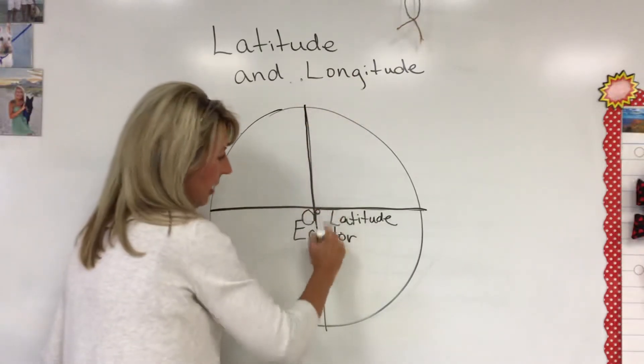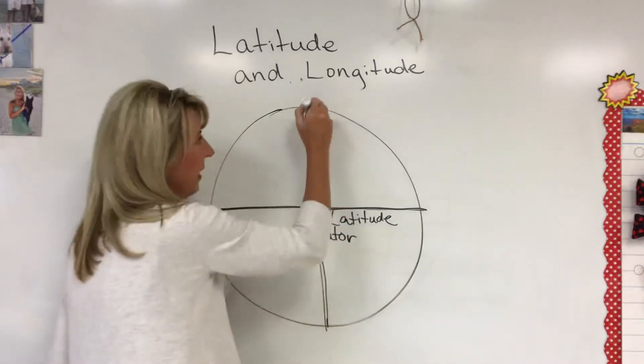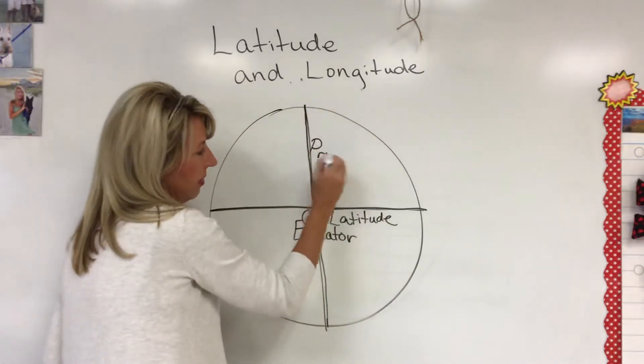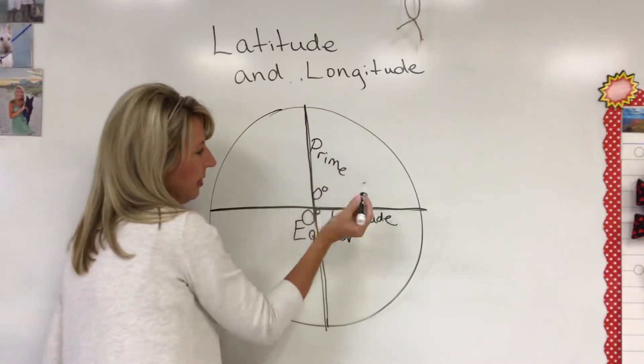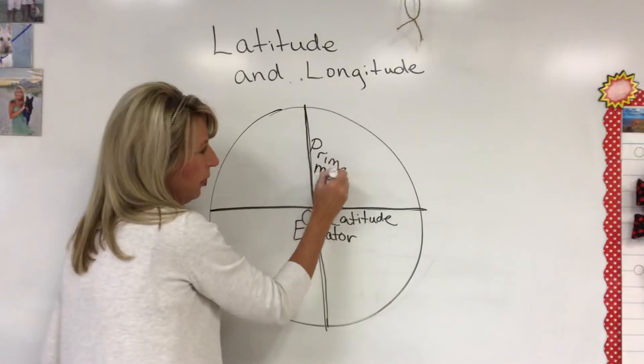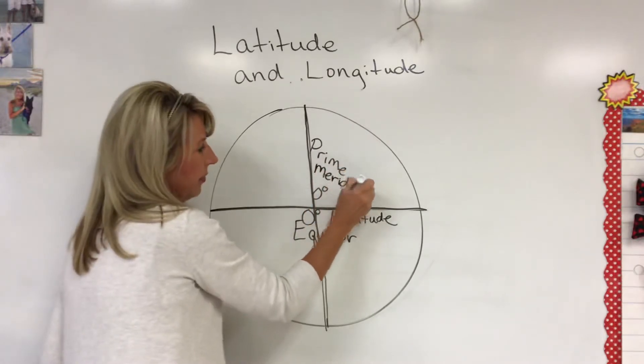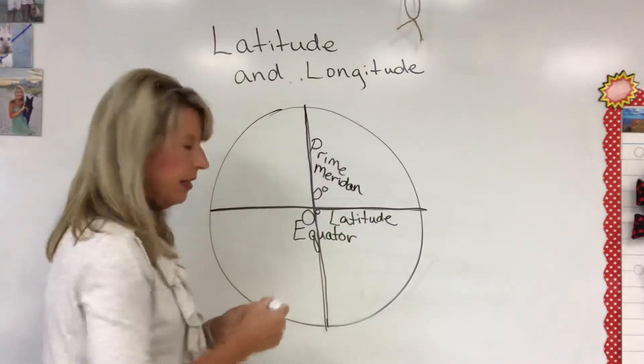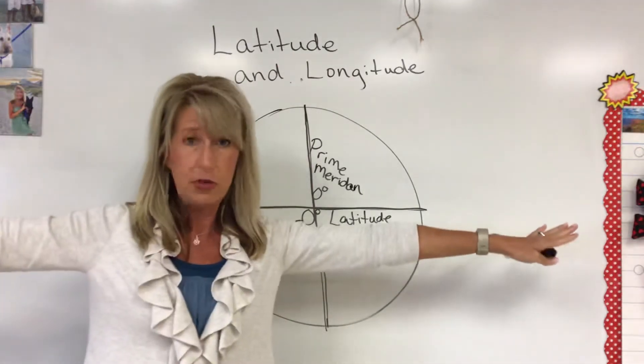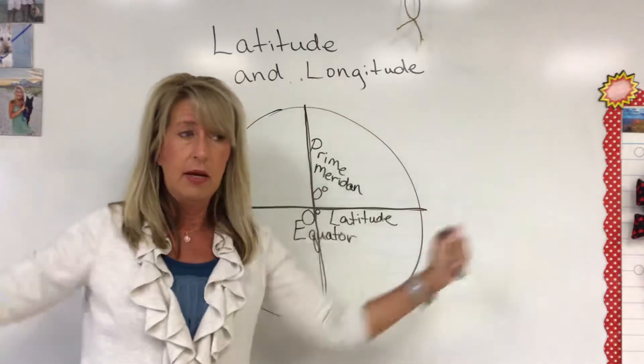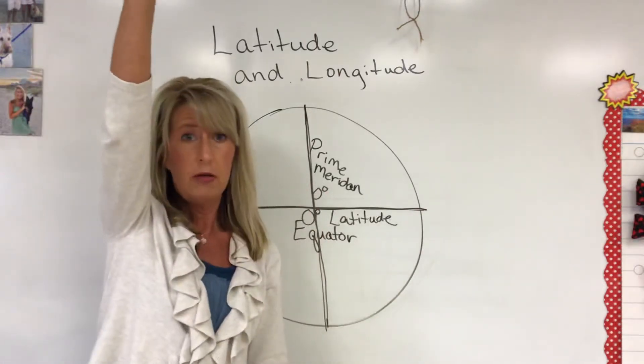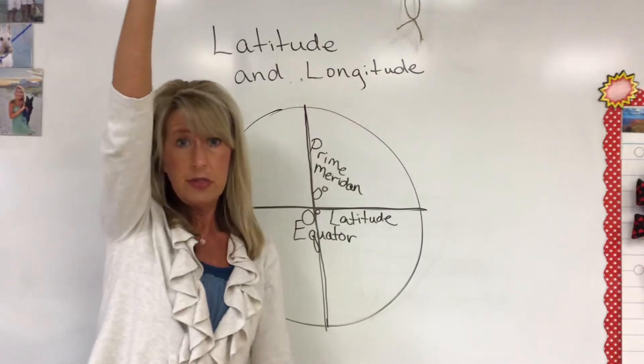This line is the prime meridian and it has a special name because it's also zero degrees, but this time it is longitude, not latitude. So the best way to remember this is latitude is flatitude. Lat, flat.